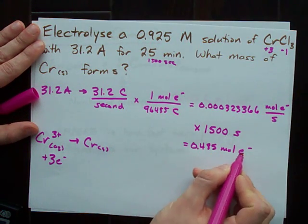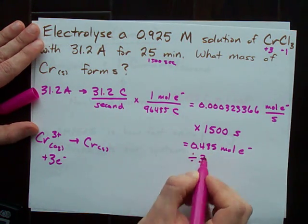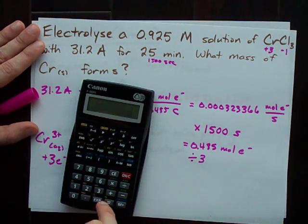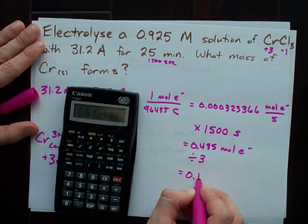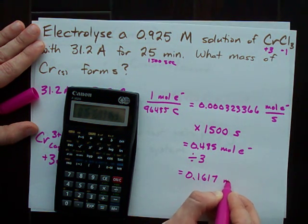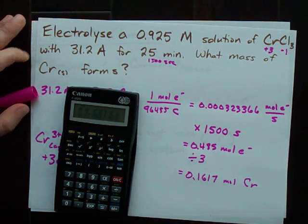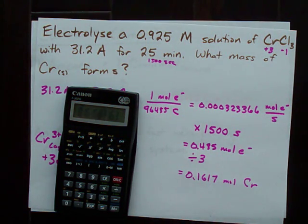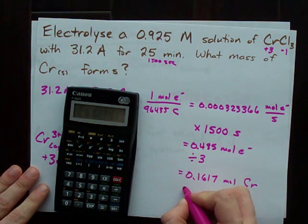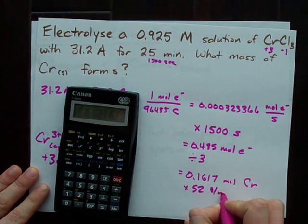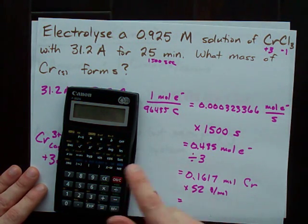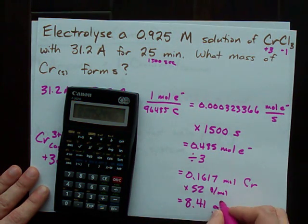Which means to figure out how many moles of chromium I can make, I have to divide this by 3. I'm only going to get a third as much chromium as I pumped in of electrons. Then, to figure out the mass of solid chromium that forms, all I need to do is multiply that by the molar mass, which I don't have handy, but I'm looking it up online right now. The molar mass of chromium is 52 grams per mole. And I end up with 8.41 grams.